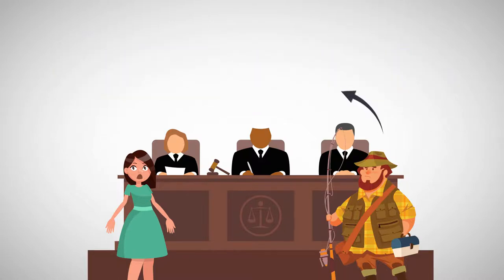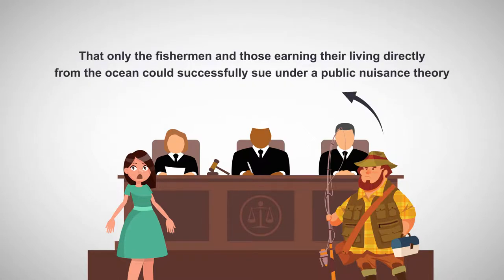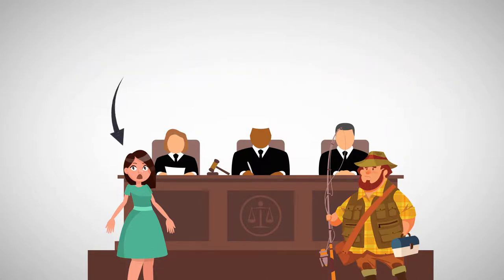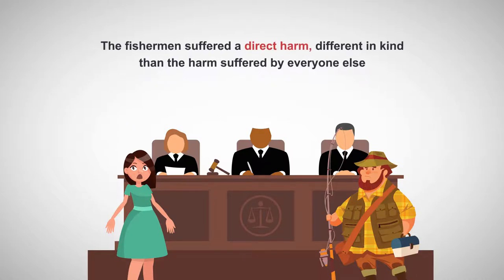The court determined, however, that only the fishermen and those earning their living directly from the ocean could successfully sue under a public nuisance theory. Unlike the hotel and business owners who were impacted indirectly in the same manner as the public at large, the fishermen suffered a direct harm different in kind than the harm suffered by everyone else.